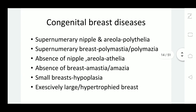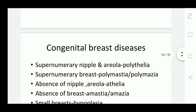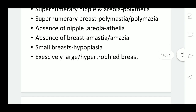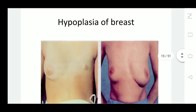Congenital breast diseases: there could be a supernumerary nipple or supernumerary areola, known as polythelia. There could be supernumerary or extra breast tissue, known as polymastia. There may be absence of nipple or areola, which is athelia. Absence of breast is known as amastia or amazia. There may be a small breast, that is hypoplasia, or a complaint of asymmetrical breast tissue where one breast is developed normally and another may be smaller or bigger. There could also be excessively large or hypertrophied breast.